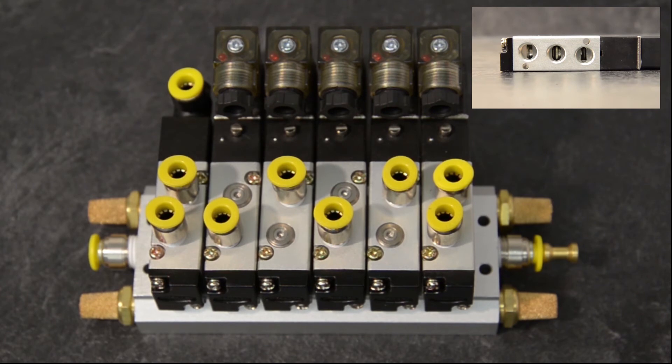In order to get a normally open three-way, we plug the B port and leave the exhaust ports open. In order to get a normally closed three-way, we plug the A port and leave both exhaust ports open.